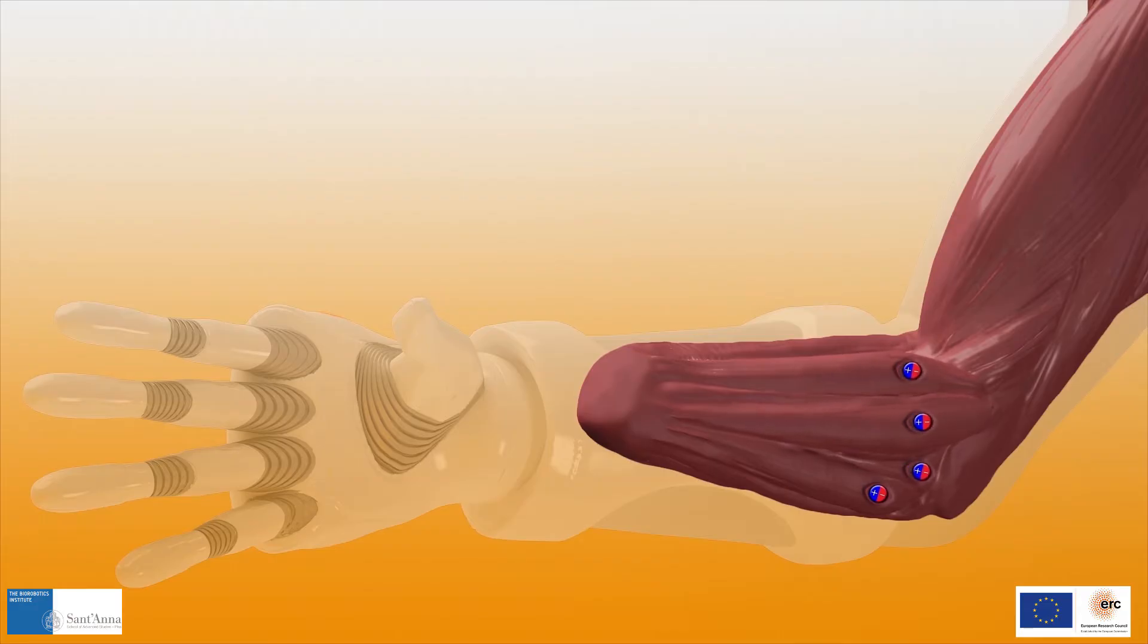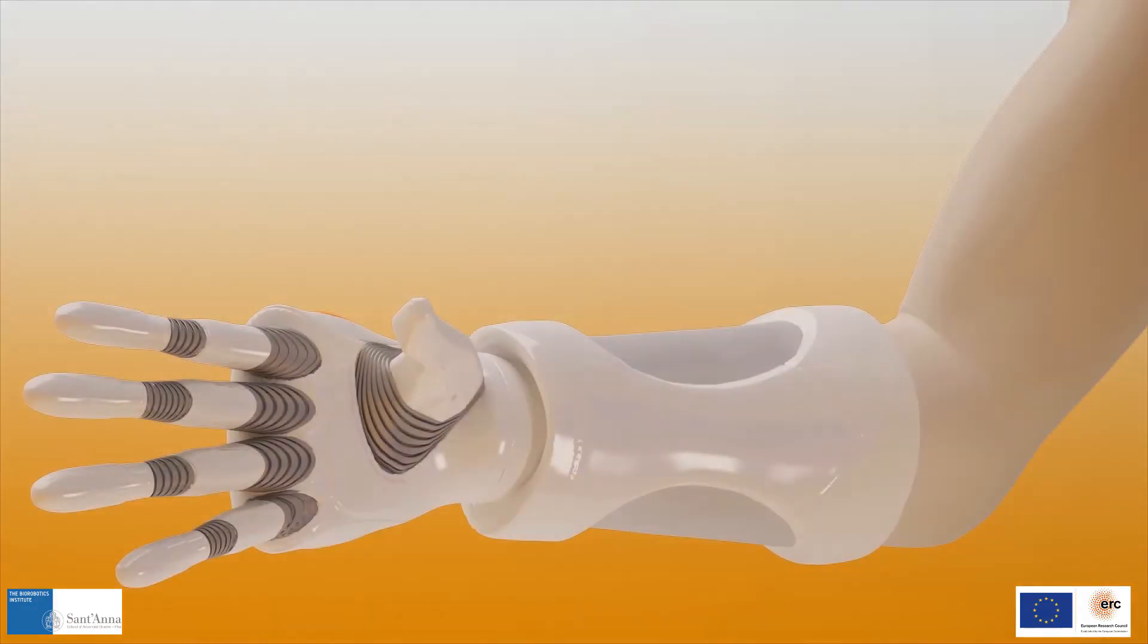This information can thus be used to control different movements of the hand prosthesis in a proportional, independent and simultaneous way, exactly as it happens with the natural limb.